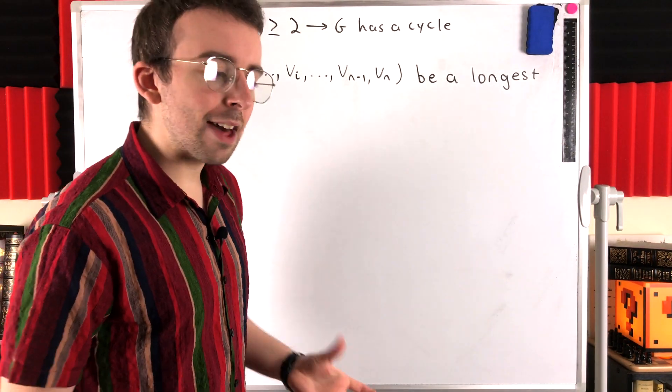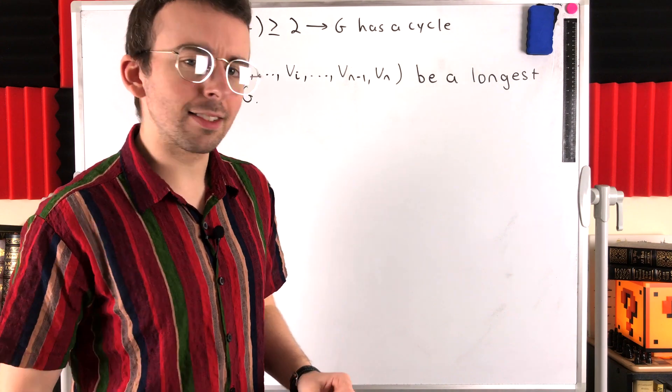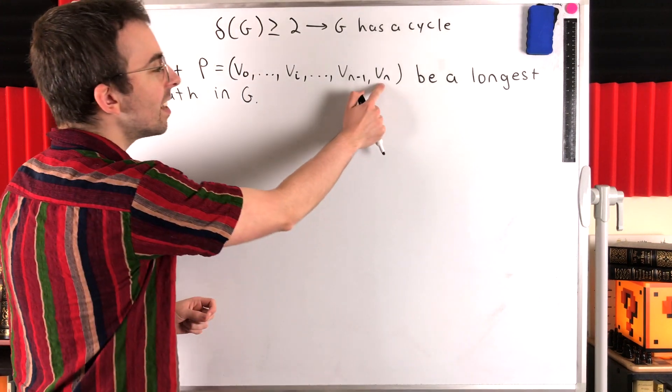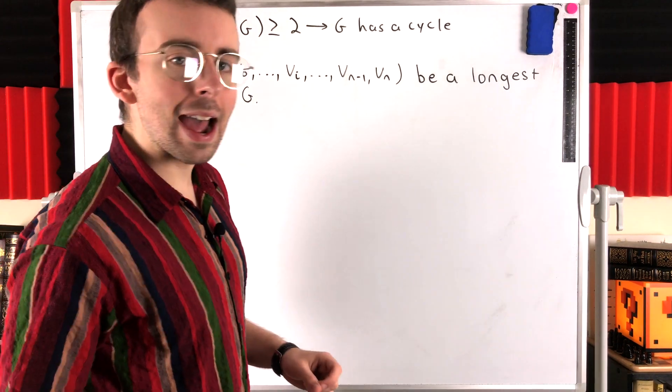Now, how can we use this path to guarantee the existence of a cycle? Well, consider the last vertex of the path, VN.